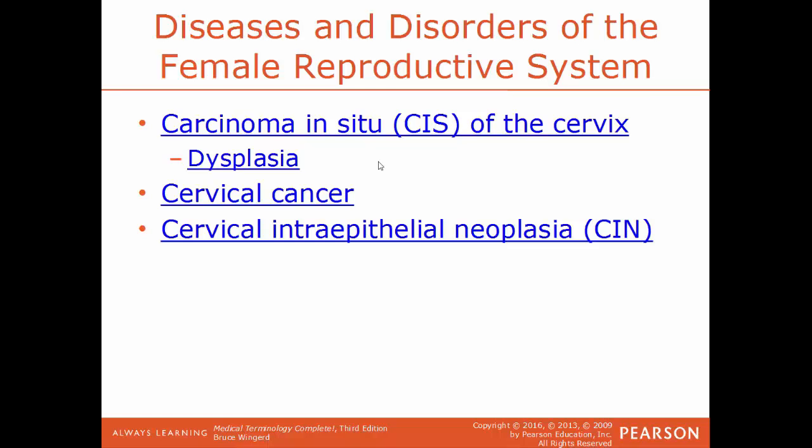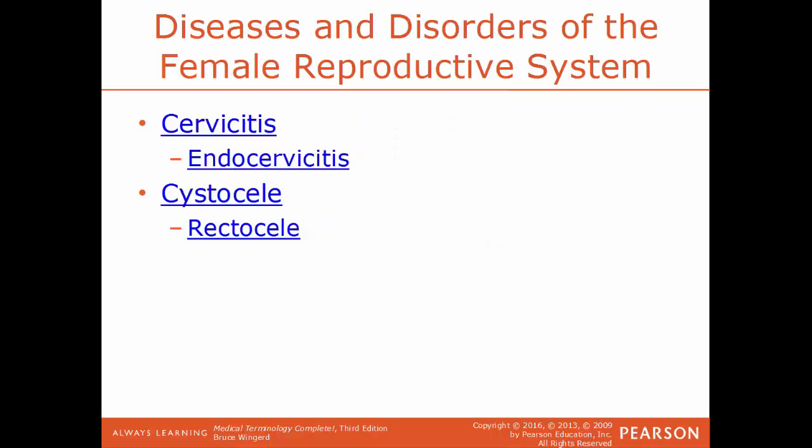If abnormal dysplastic cells continue to grow, that leads to CIN, cervical intraepithelial neoplasia, where cells are transforming into pre-malignant cells — not yet cancer, but getting closer. Cervicitis is an inflammation of the cervix. Endocervicitis is the inflammation of the innermost portion of the cervix.